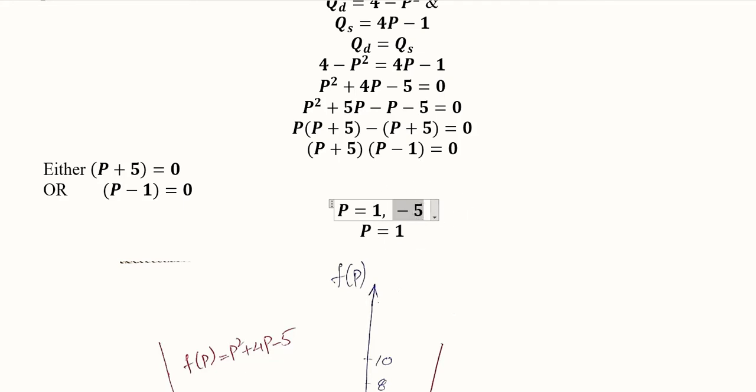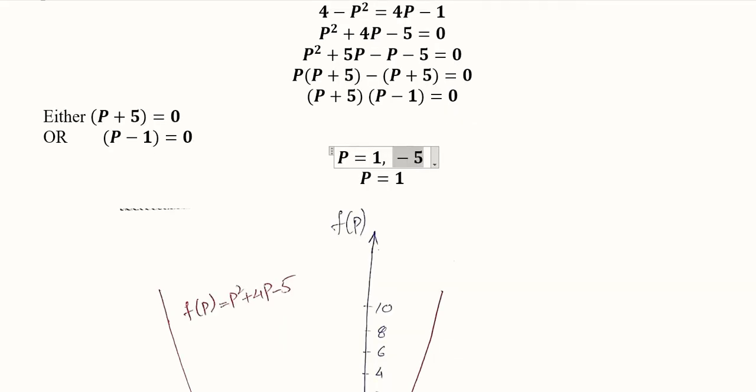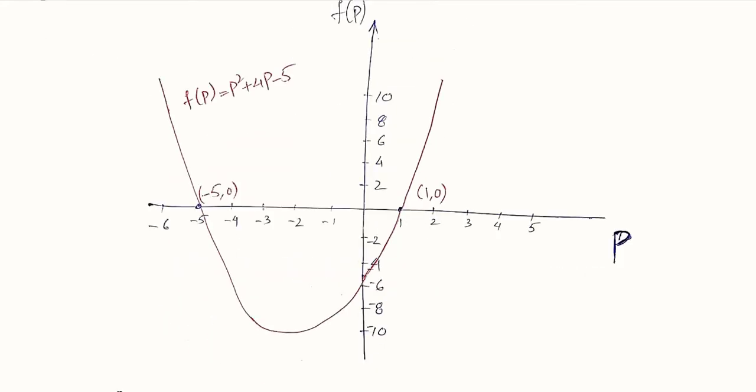So we know that minus 5 does not make any economic sense. Mathematically it is acceptable, but in economics we do not have minus prices. We have either a zero price, which is also very rare, but a positive price is very much logical. So we will dispel this negative value and we will retain only the positive value of price.